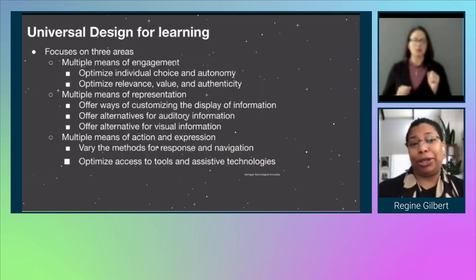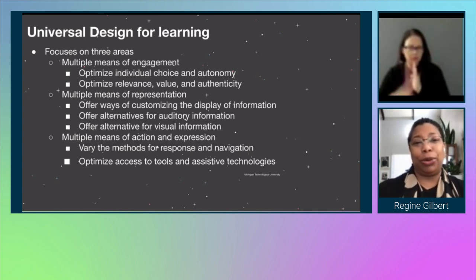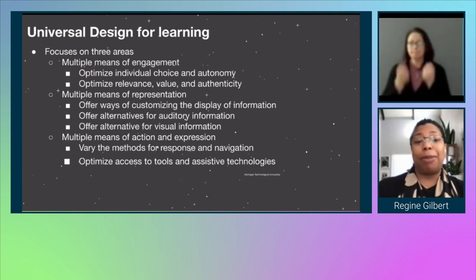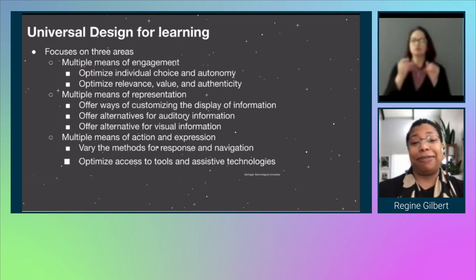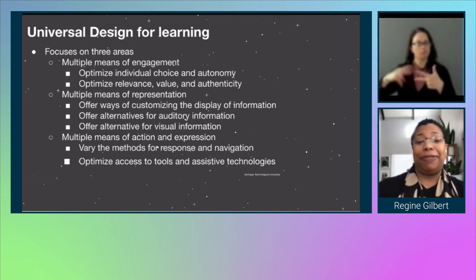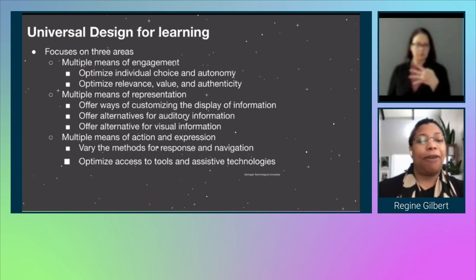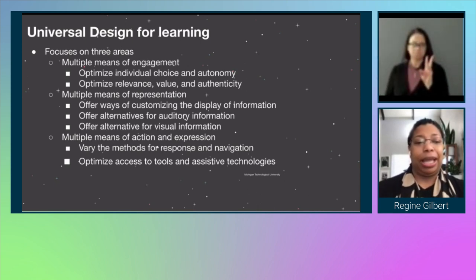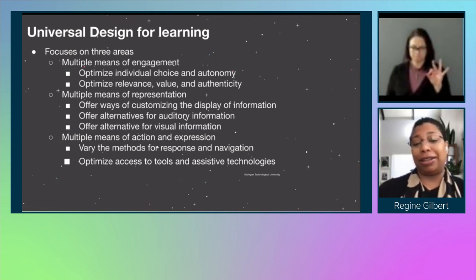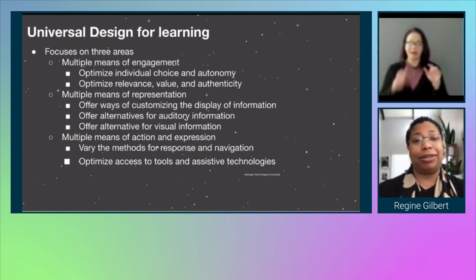I want to inform people of what universal design for learning is, as many folks who are not in education may not know about it. Universal design for learning focuses on three areas: multiple means of engagement — optimizing individual choice and autonomy, relevance, value, and authenticity; multiple means of representation — offering ways of customizing the display of information, alternatives for auditory information, and alternatives for visual information; and multiple means of action and expression — varying methods for response and navigation, and optimizing access to tools and assistive technologies. This is from Michigan Technological University.